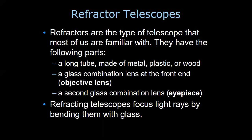Refractor telescopes are the type most of us are familiar with. They have two main parts: a long tube made of metal, plastic, or wood, and glass combination lenses at the front and at the eyepiece. Refracting telescopes focus light rays by bending them through glass lenses.